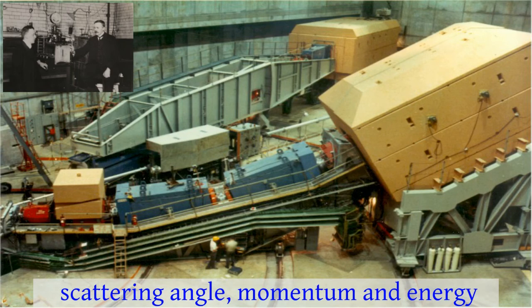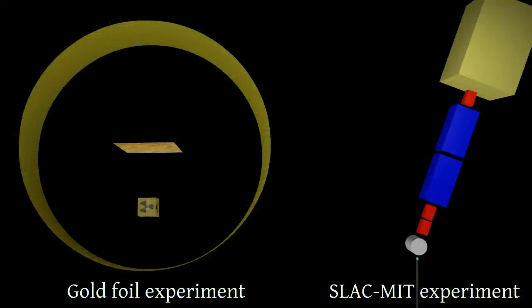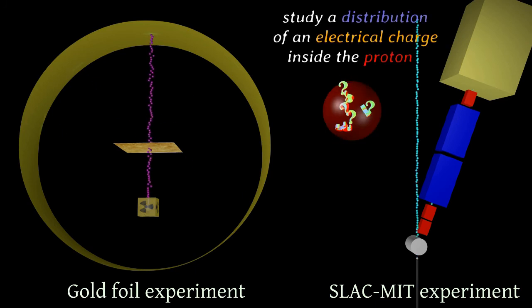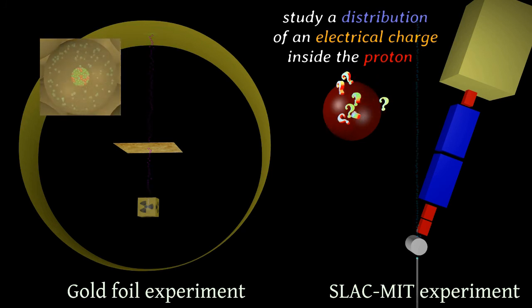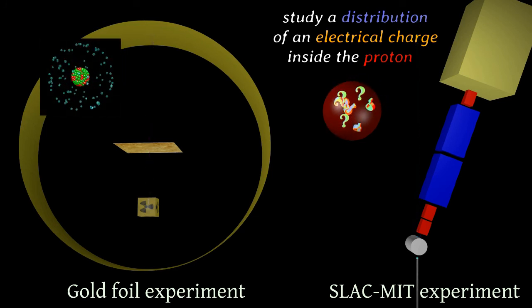However, SLAC-MIT detector can measure scattering angle, momentum, and energy. The idea of SLAC-MIT experiment was similar to the gold foil experiment: study the distribution of electrical charge inside the proton. Because the energy of the electrons from the linear accelerator is much more than the energy of alpha particles from radium in the gold foil experiment, then these electrons can look inside the proton like alpha particles look inside the atom.